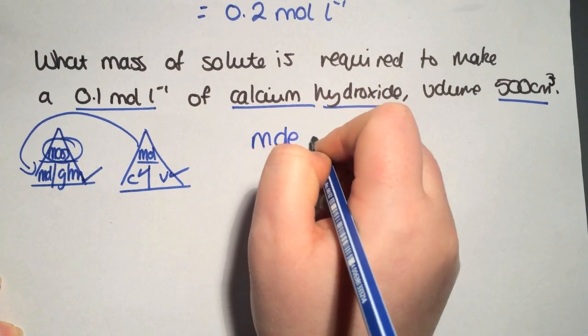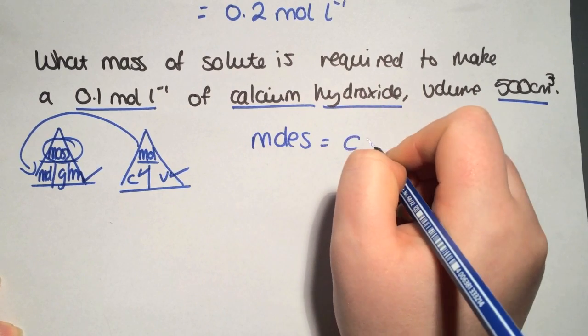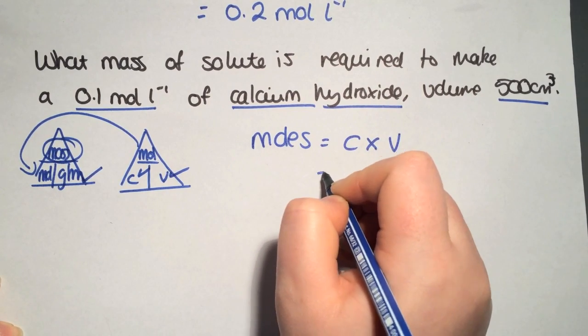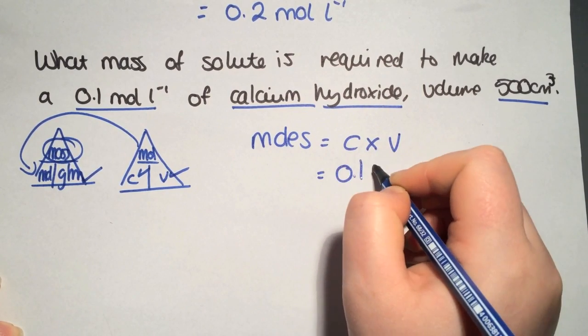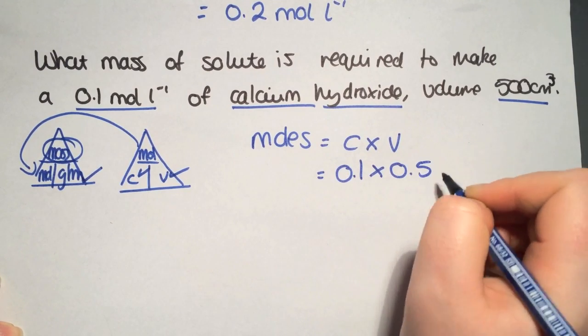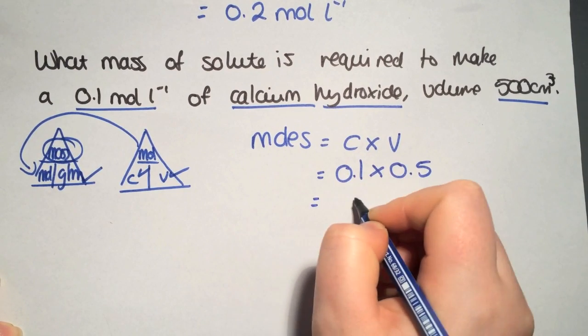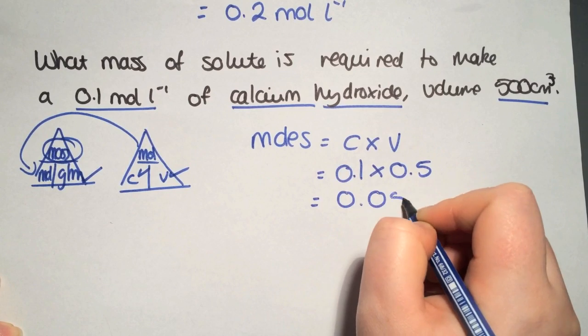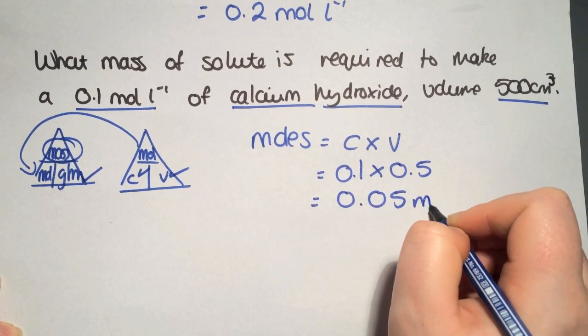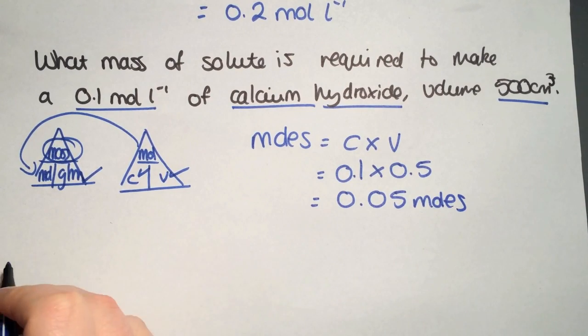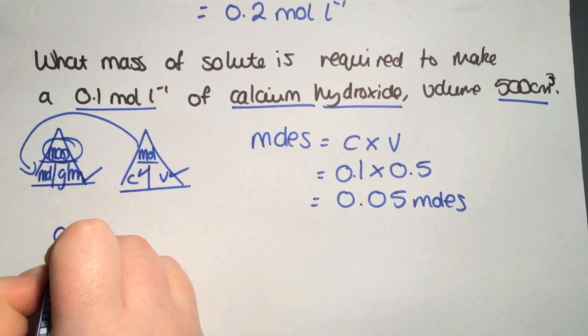Moles equals concentration times volume. Concentration of 0.1, and divide your volume by a thousand. This gives you moles of 0.05.